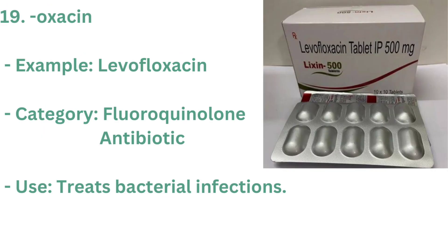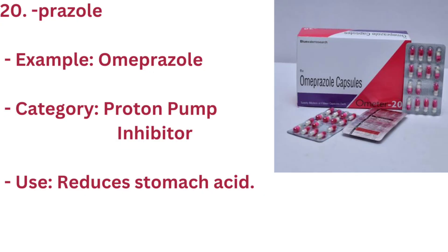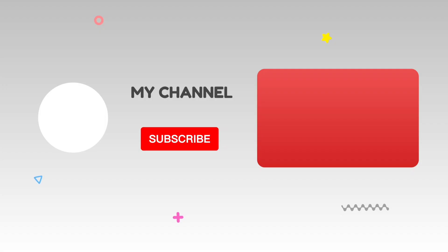19. OXACIN — Example: LEVOFLOXACIN. Category: FLUOROQUINOLONE ANTIBIOTIC. Use: TREATS BACTERIAL INFECTIONS. 20. PRAZOLE — Example: OMEPRAZOLE. Category: PROTON PUMP INHIBITOR. Use: REDUCES STOMACH ACID. Thank you for watching our video. If you like this video, please subscribe to our channel.